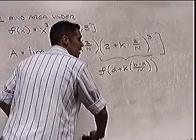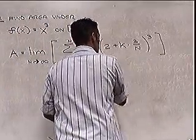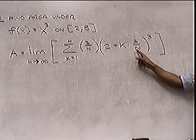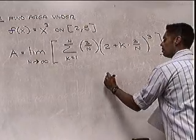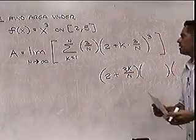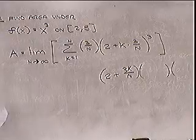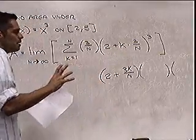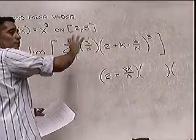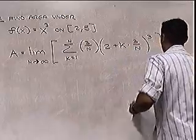Now appreciate how difficult this is to compute - I need to cube 2 plus 3k over n, which means multiplying it by itself three times, giving a cubic polynomial in k and n. I'd have n cubes and k cubes in there; it's going to be a mess. So right now I'm going to stop here. This is the formula - if I can compute that, I've got the true area.